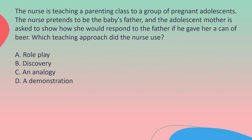The nurse is teaching a parenting class to a group of pregnant adolescents. The nurse pretends to be the baby's father, and the adolescent mother is asked to show how she would respond to the father if he gave her a can of beer. Which teaching approach did the nurse use? A. Roleplay. B. Discovery. C. Analogy. D. Demonstration.